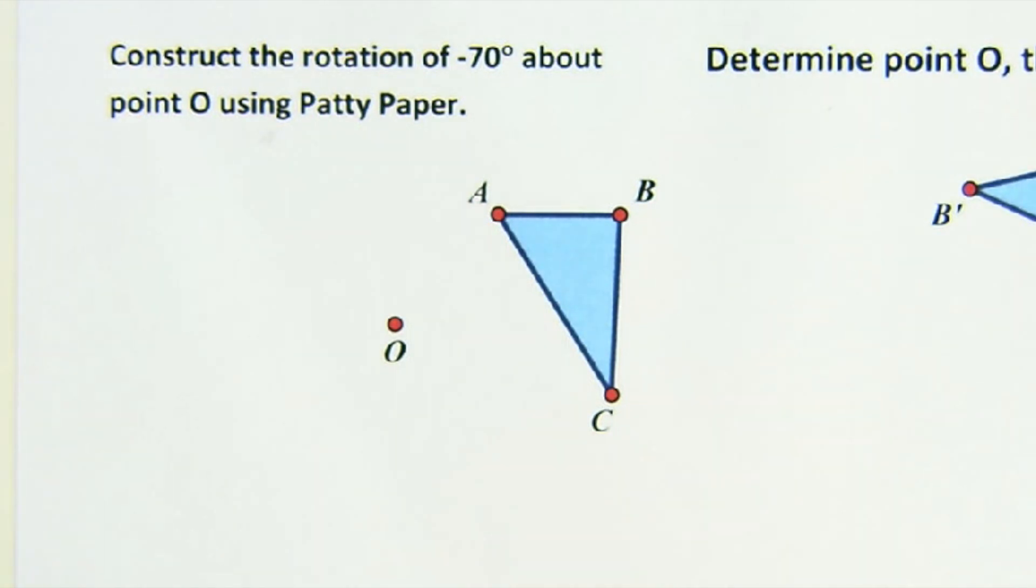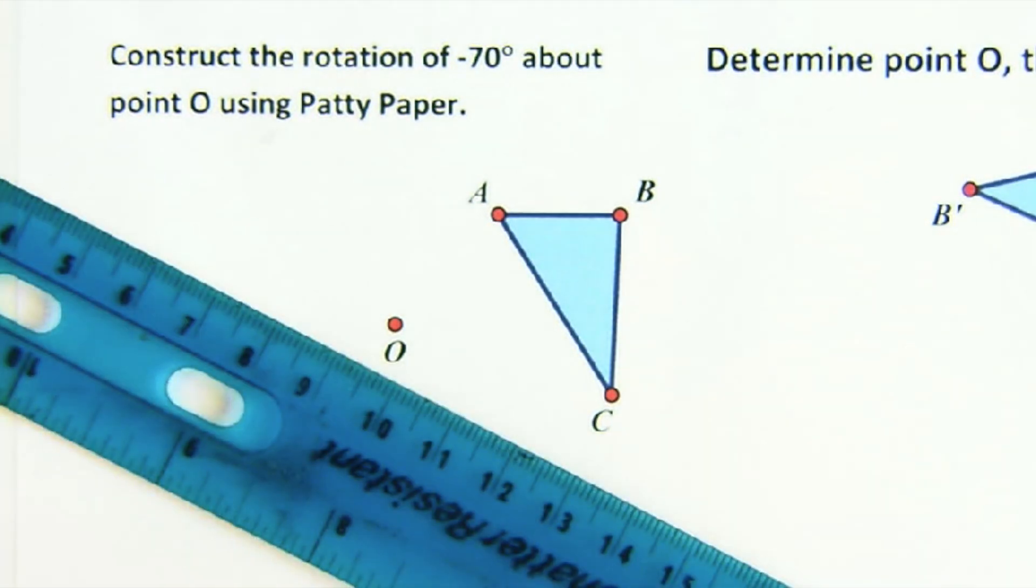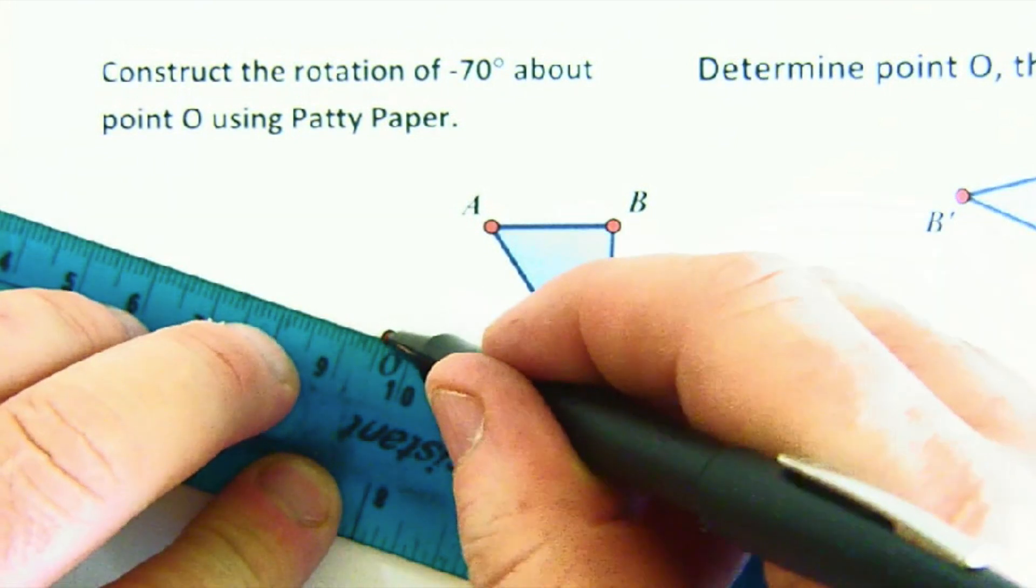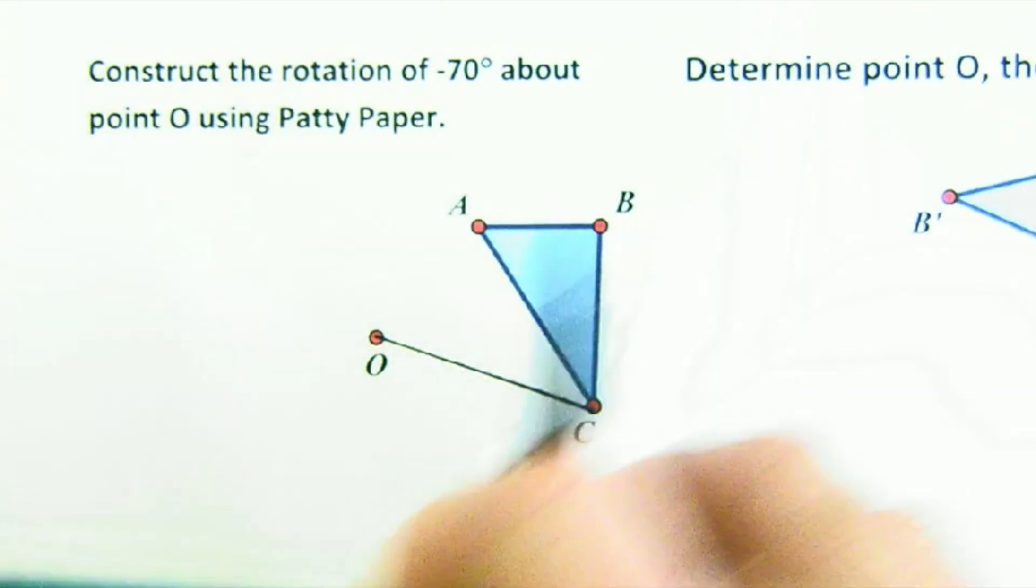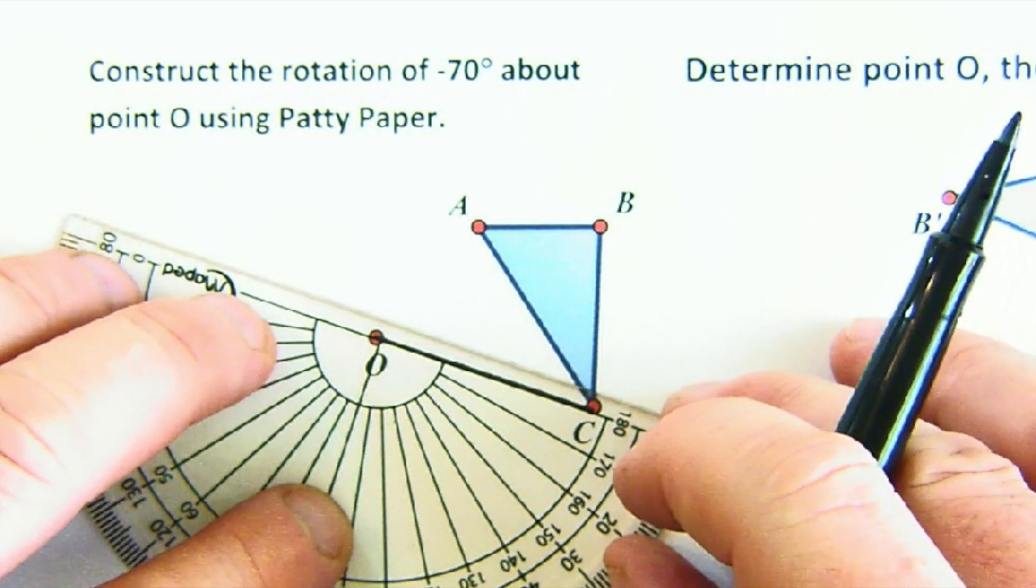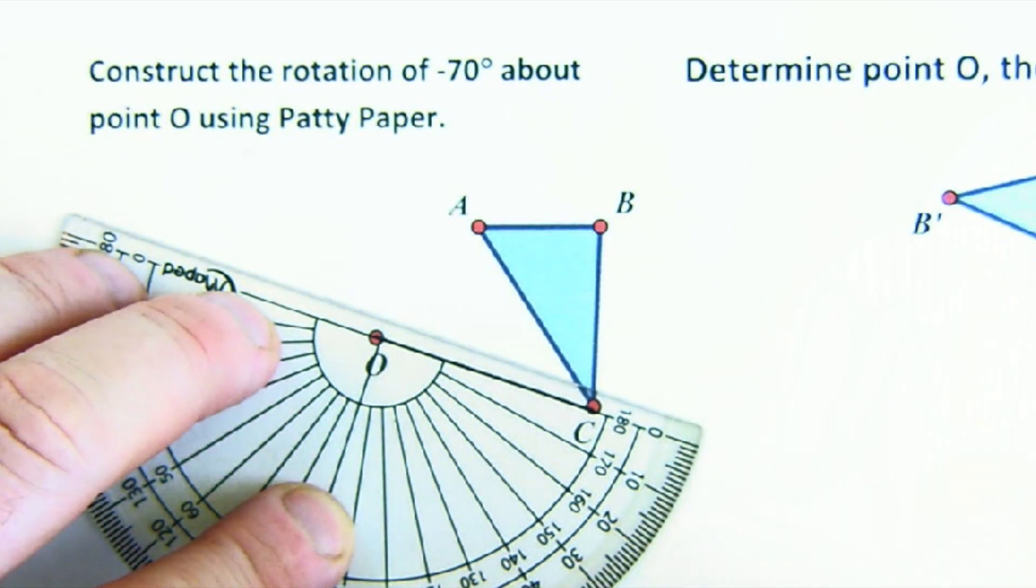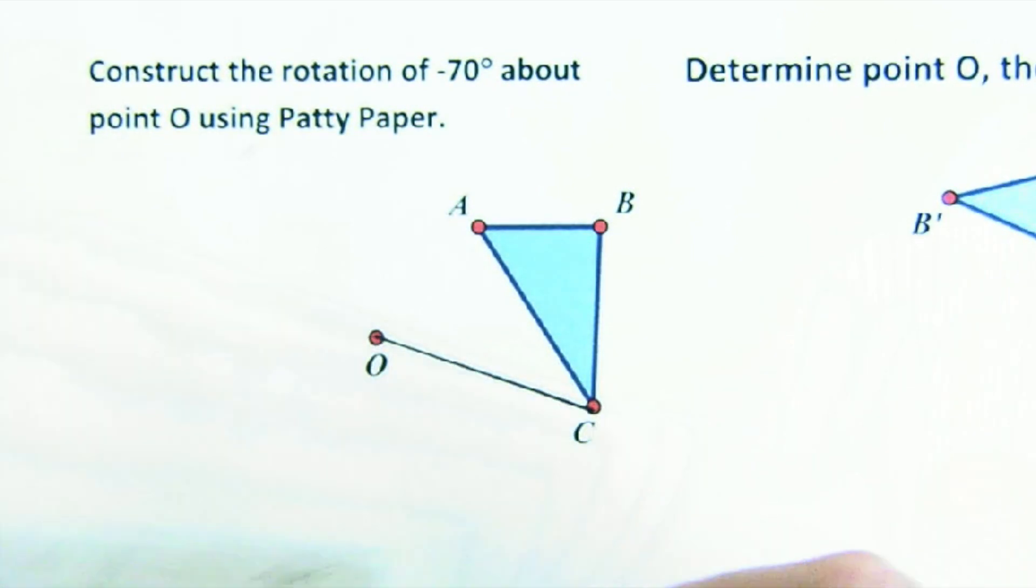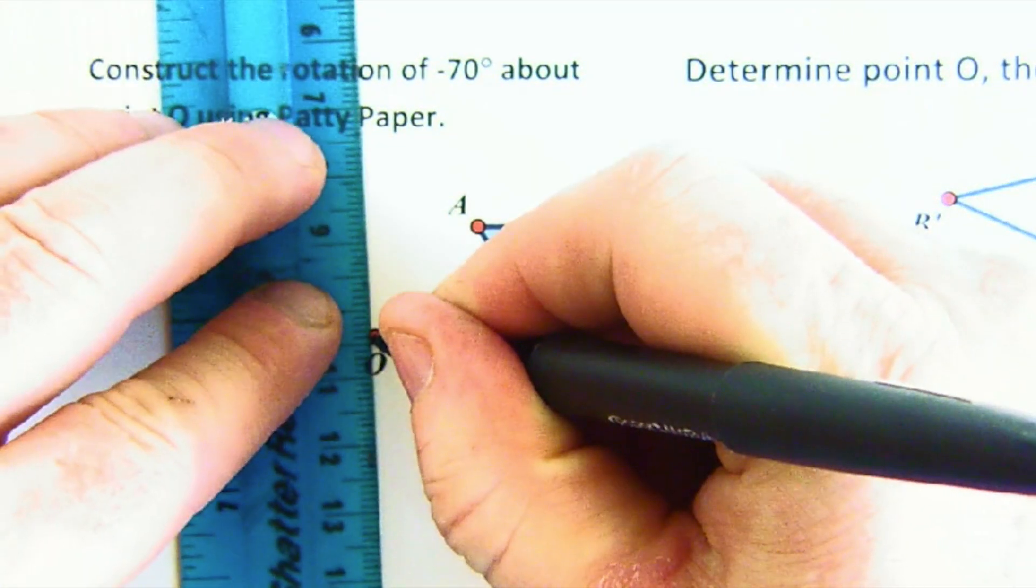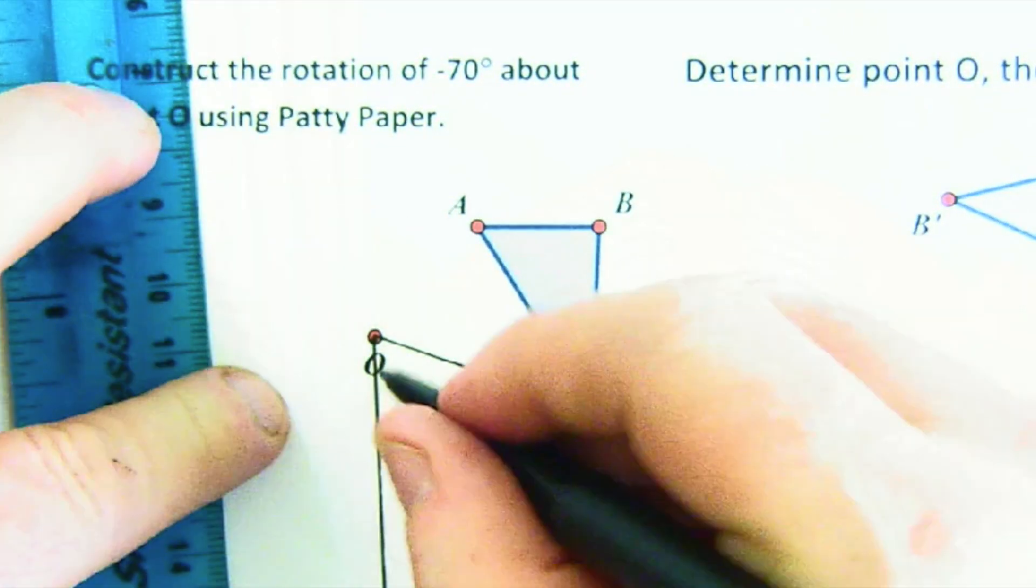So here's what we've got to do to do it by patty paper. We still need our angle. Oh wait, this is negative 70. Good practice on this. So things are going to move in a clockwise manner, 70. So I'm going to put this guy down. Initial arm will move here to 70, and I'm just going to create an angle of 70 degrees.